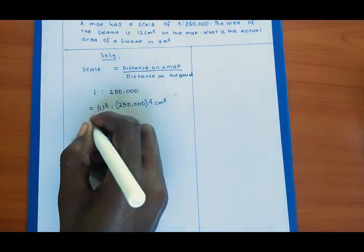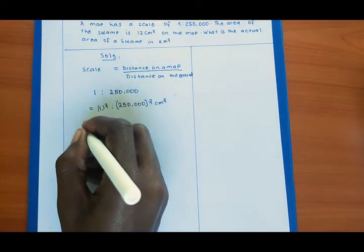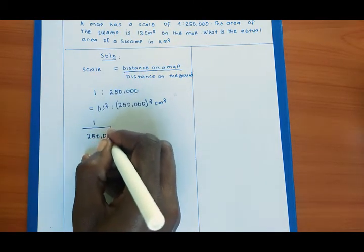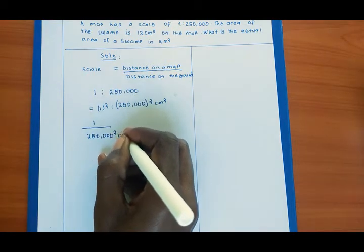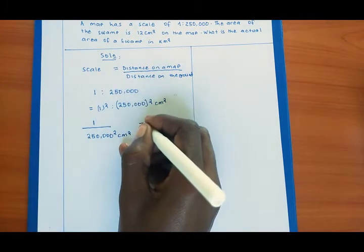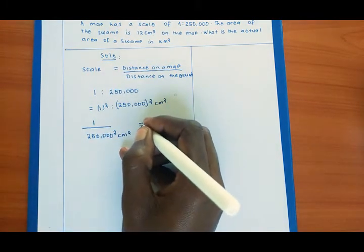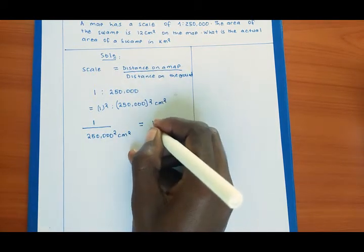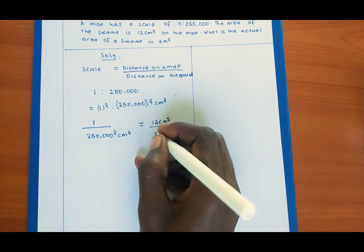So you write the scale which is 1 out of 250,000 squared. The distance is equal to the distance on the map they have given us. This is 12 centimeters squared divided by distance on the ground.